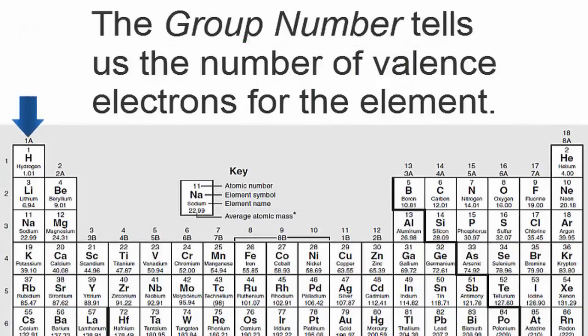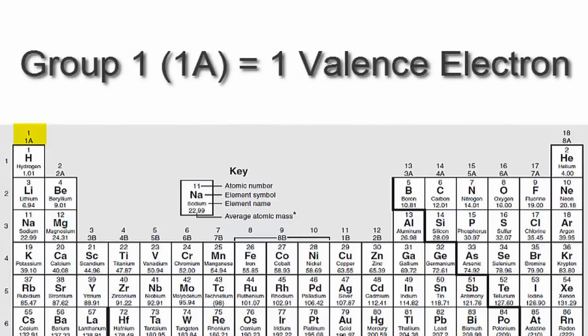For example, hydrogen has one valence electron because it's in group 1, sometimes called 1A.